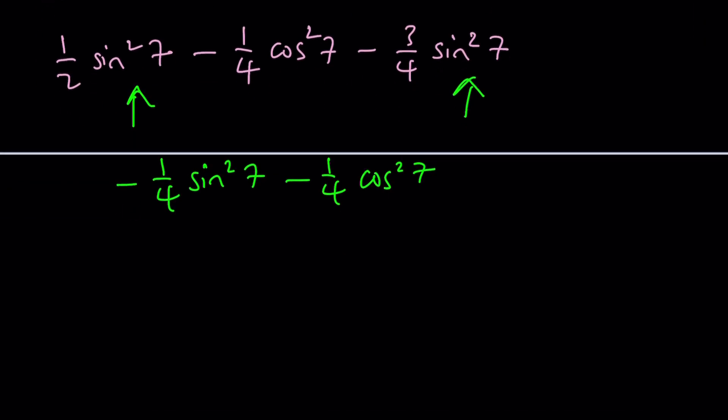That's not the final answer because now we can factor out negative 1 fourths. And inside, we're going to find one of the most important identities in mathematics. And that is sine squared alpha plus cosine squared alpha, which comes from the Pythagorean theorem. And that's equal to 1. So the answer is negative 1 fourths.